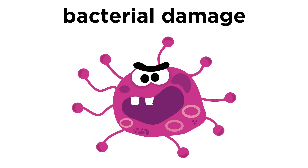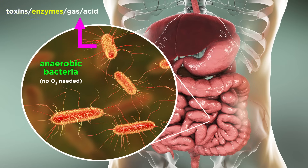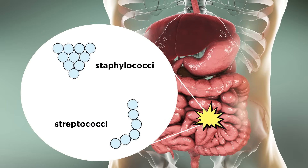Now that we've covered the ways that bacteria colonize and invade bodies, let's talk about specific ways they cause damage. For some bacteria, natural byproducts of their growth can cause tissue destruction. For instance, in your gut, anaerobic bacteria — those that don't require oxygen for growth — can produce toxins, enzymes, gas, and acid, all of which destroy the surrounding tissue. Some examples are staphylococci or streptococci. Once the process has begun, the bacteria have momentum, with these enzymes facilitating the spread of disease.